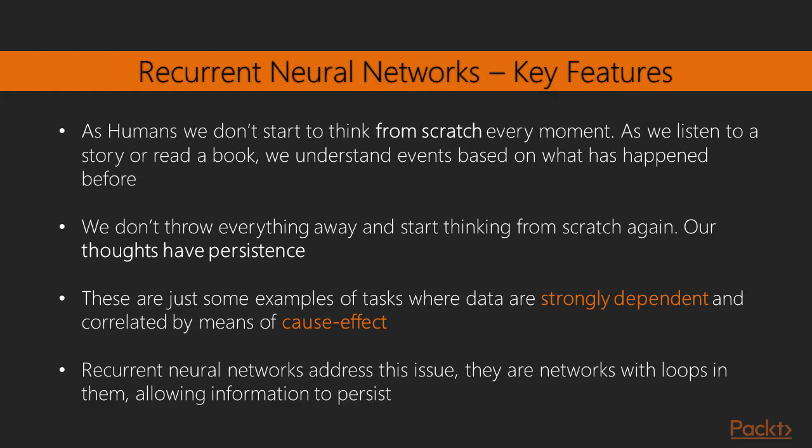As we have seen in the previous sections, fully connected artificial neural networks and CNNs receive an input, a single vector, transform it through a series of hidden layers and produce an output. However, humans don't start their thinking from scratch every moment. As we listen to a story or read a book, we understand events based on what has happened before. We don't throw everything away and start thinking from scratch again. Our thoughts have persistence.